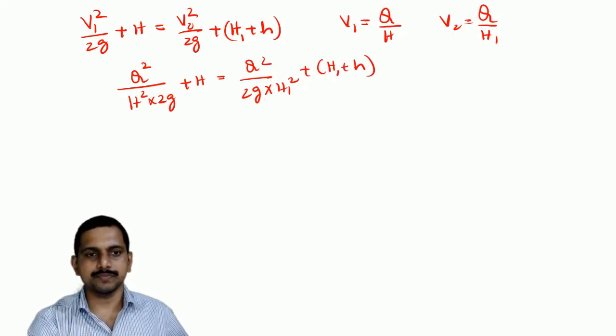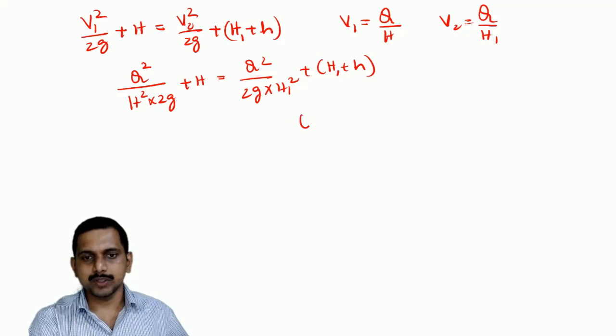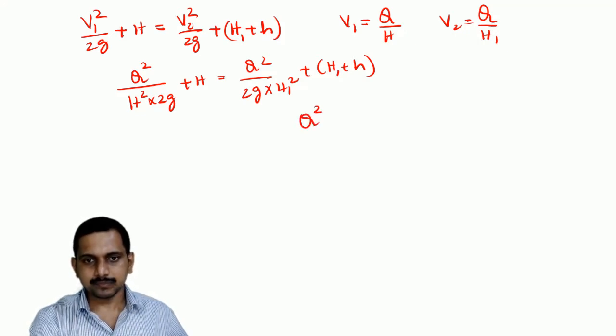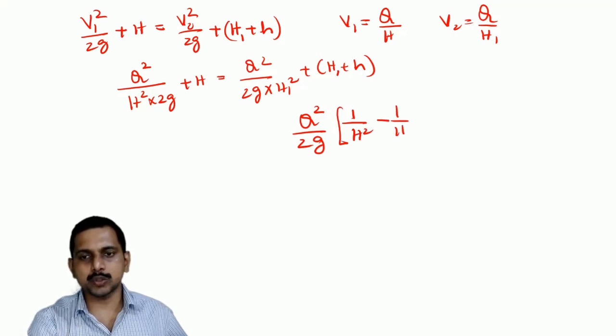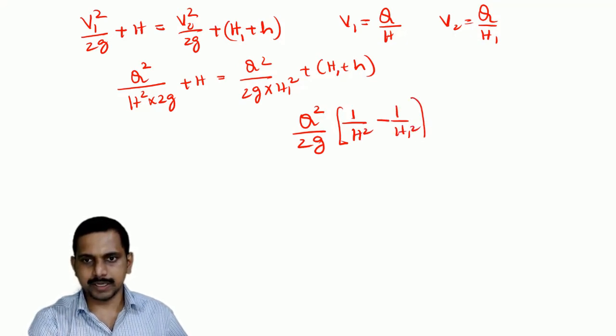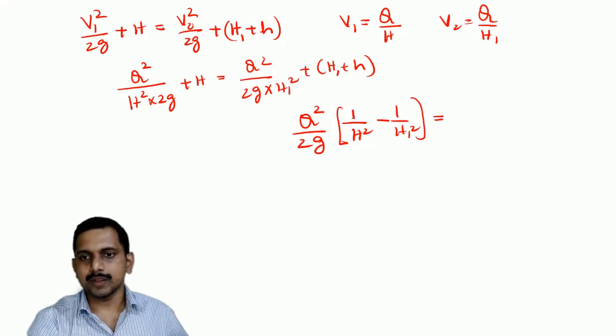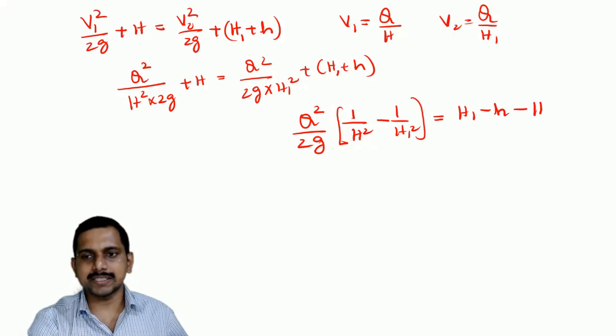So now, this comes as Q square by 2g into, from here, I am taking this, this side. So it is 1 by h square minus 1 by h1 square, is equal to h1 minus small h minus capital H.